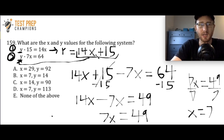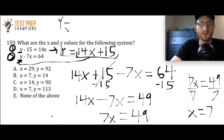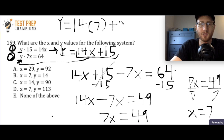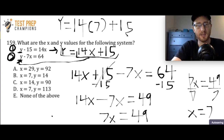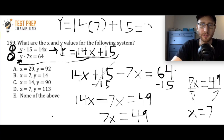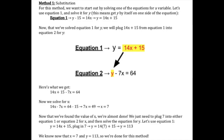Now that I know x equals 7, I can pick either equation 1 or equation 2 and plug 7 in. I'll use equation 1, which I already solved for y: y equals 14x plus 15. Substituting x equals 7, I calculate y equals 113. So the correct answer is D. If you used a different method and still got D, you did it the right way. Take all the time you need to study this solution before moving on.